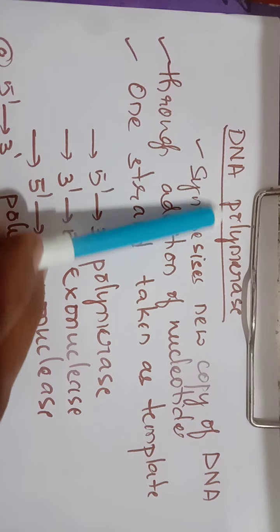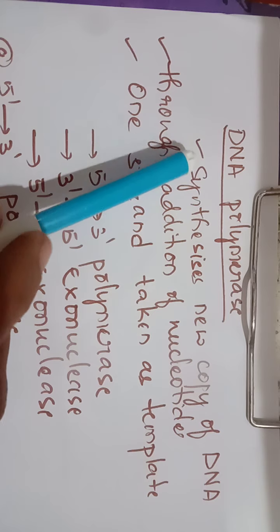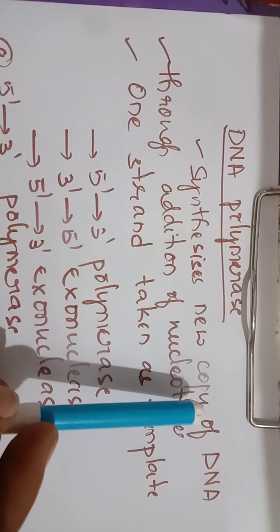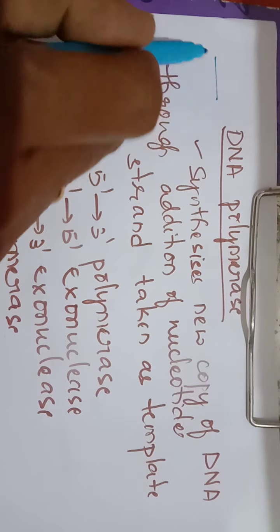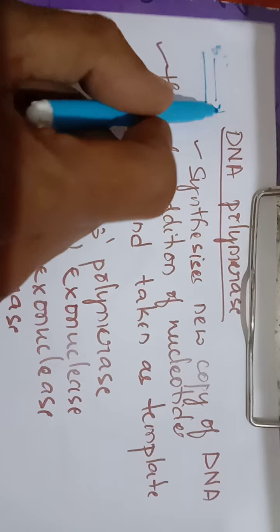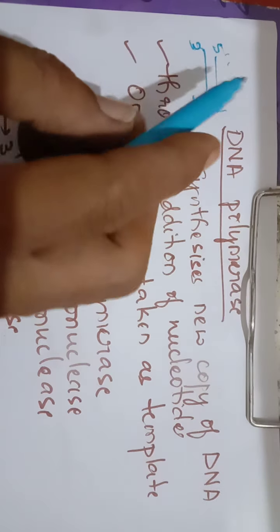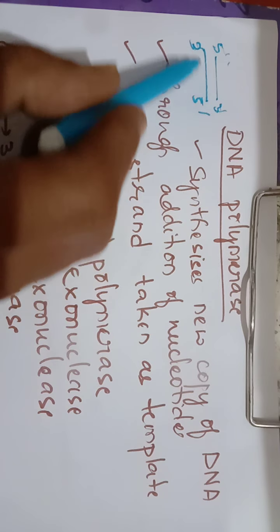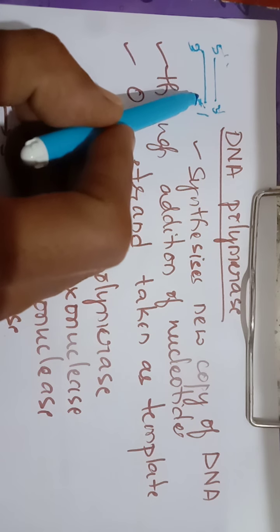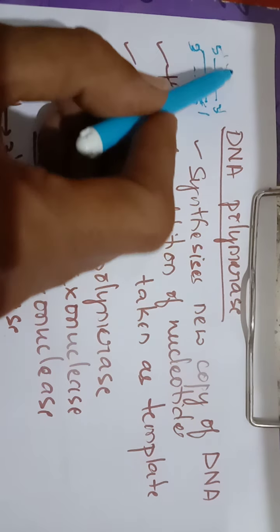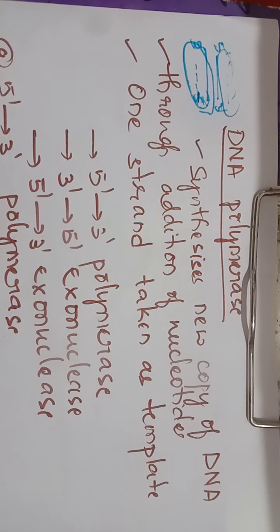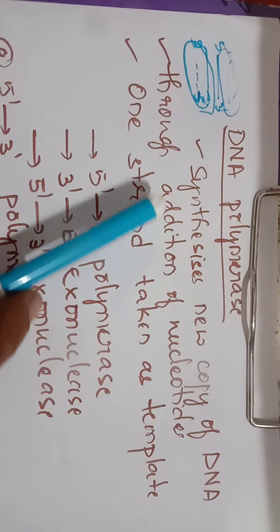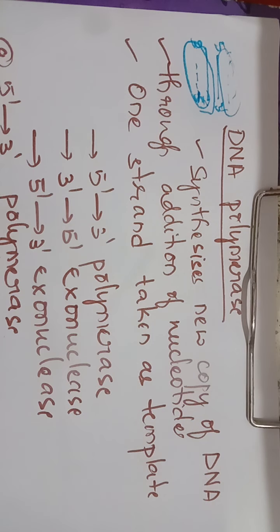Last class we were discussing about DNA polymerase. DNA polymerases are enzymes that synthesize a new copy of DNA. DNA has two strands — one running in the 5 prime to 3 prime direction and another in the 3 prime to 5 prime direction. The DNA polymerase takes one strand as the template strand and adds nucleotides to synthesize a new copy of DNA.